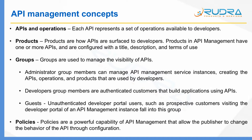Thirdly, groups are used to manage visibility of APIs, and there are three types. Administrator group members can manage API management service instances — they create APIs, operations, and products. Developer group members are authenticated customers who build applications using these APIs. Finally, guests are unauthenticated developer portal users, such as prospective customers visiting the portal — they can view APIs and assess whether they fit their requirements.